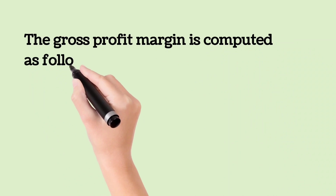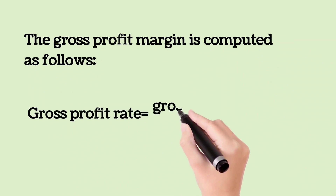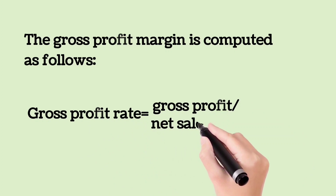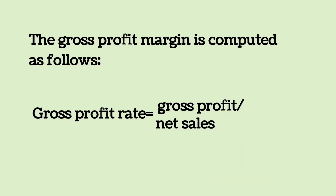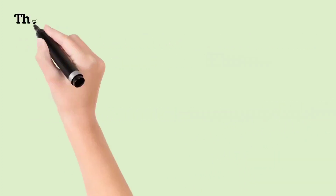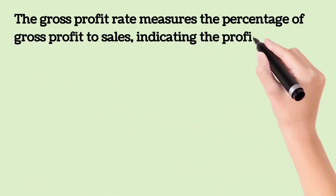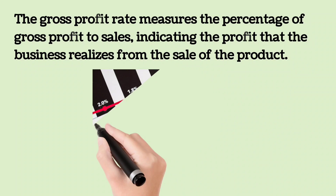The gross profit margin is computed as follows. Gross profit rate is equal to gross profit divided by net sales. The gross profit rate measures the percentage of the gross profit to sales, indicating the profit that the business realizes from the sale of the product.